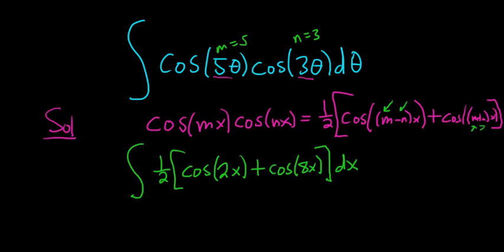To finish we just break it up. So this is 1 half integral of cosine 2x dx. Plus 1 half integral of cosine 8x dx.